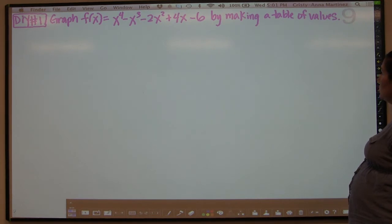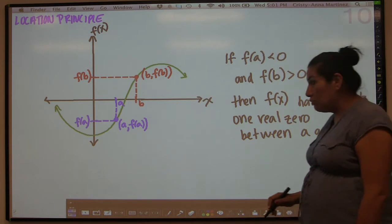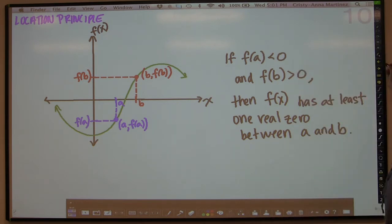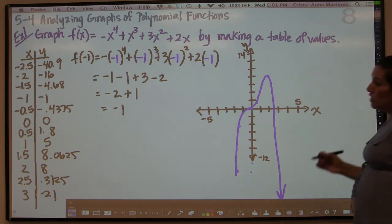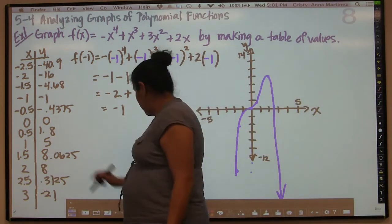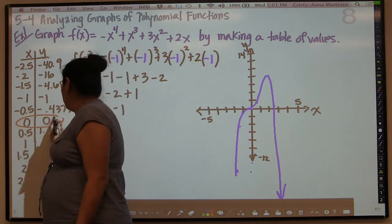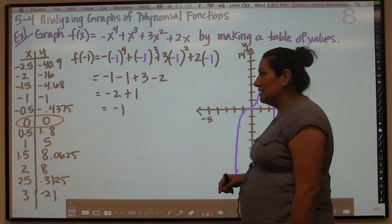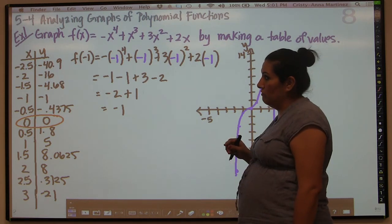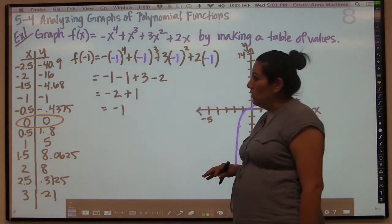This is your do-it-yourself question, and then we will graph another one right after we talk about the location principle. There are a couple of things you probably noticed in the last graph. We know that one of the zeros is right here, because we got x = 0, y = 0. So we're looking for anywhere where the y value is 0. What the location principle basically tells us is that any time the function changes sign, that's going to be somewhere where you have a zero.